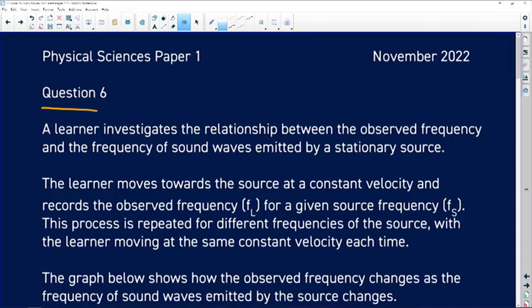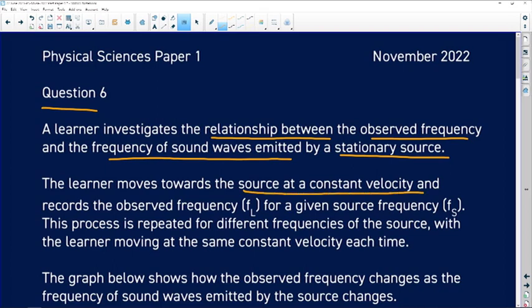We are now looking at Physical Sciences November 2022, Question 6, which is Doppler effect. Let's attack this question. It says a learner investigates the relationship between the observed frequency and the frequency of sound waves emitted by a stationary source. The learner moves towards the source at a constant velocity.